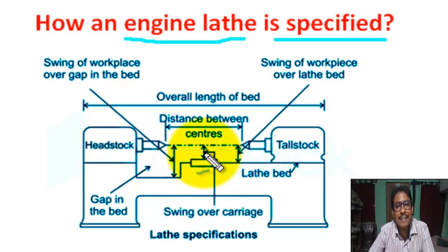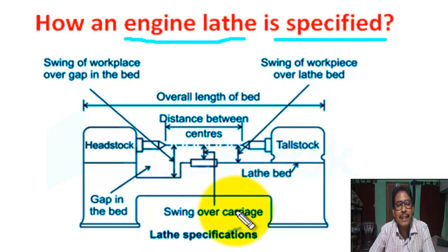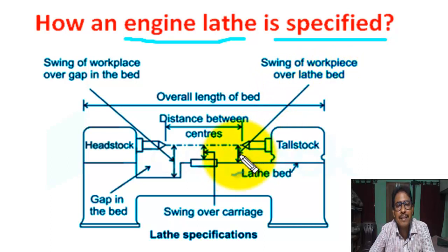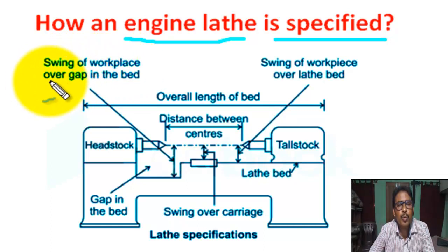This distance is the swing of the workpiece over the gap in the bed — this is the gap in the bed. This distance from the bed to the center line is the swing over the carriage. The swing over the lathe bed means the maximum diameter of the workpiece that can rotate over the lathe bed. The swing over the gap in the bed refers to the maximum diameter possible at the gap.